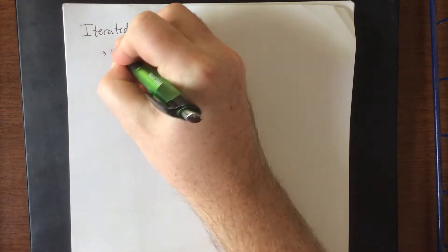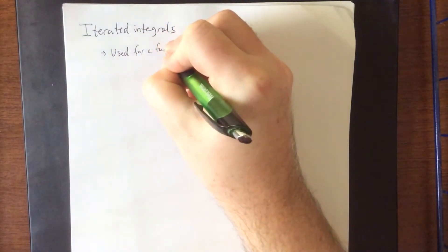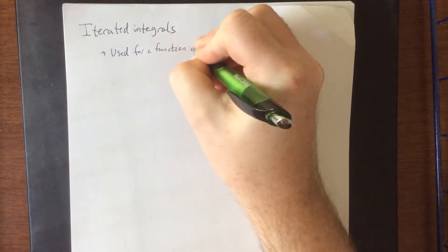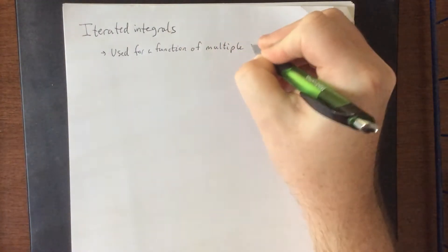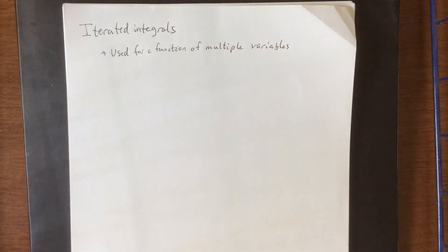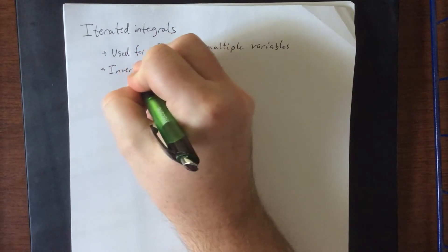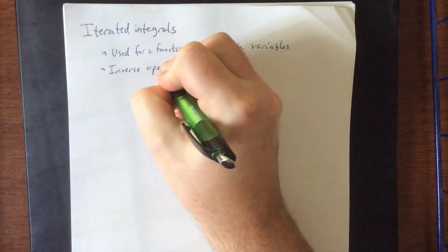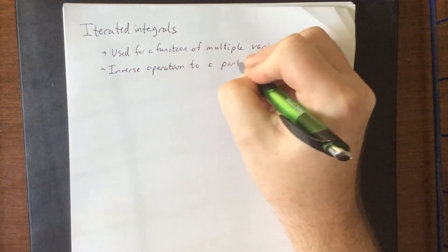An iterated integral is used for a function of multiple variables. Additionally, this is the inverse operation to a partial derivative.